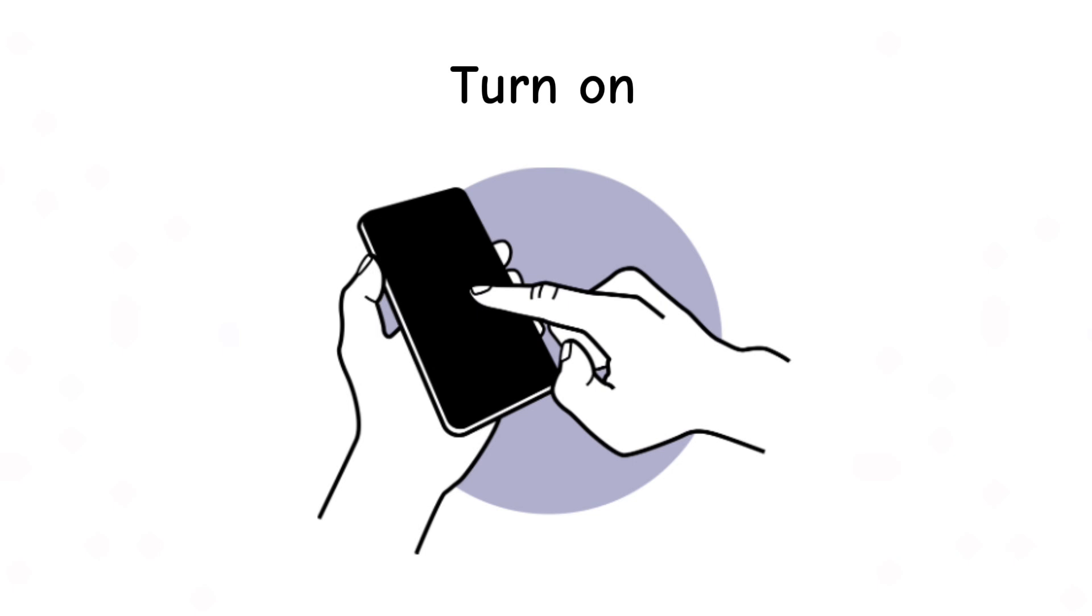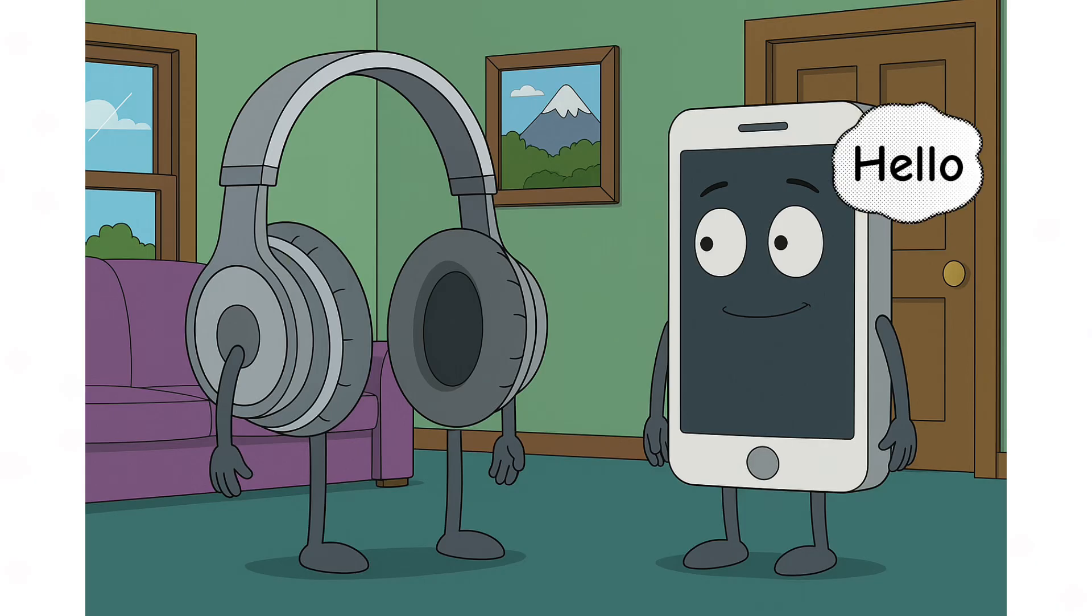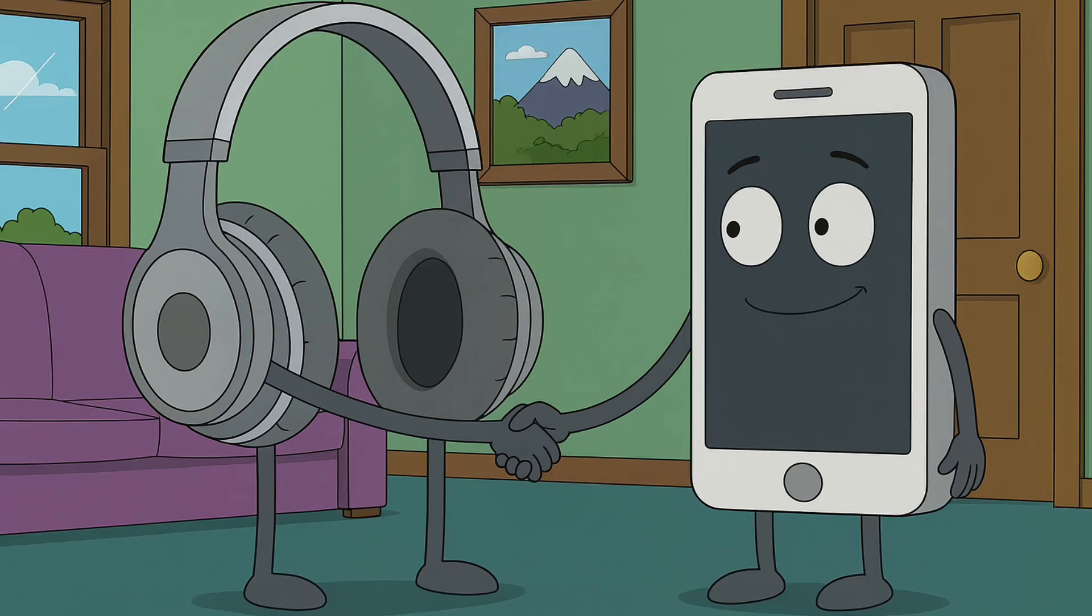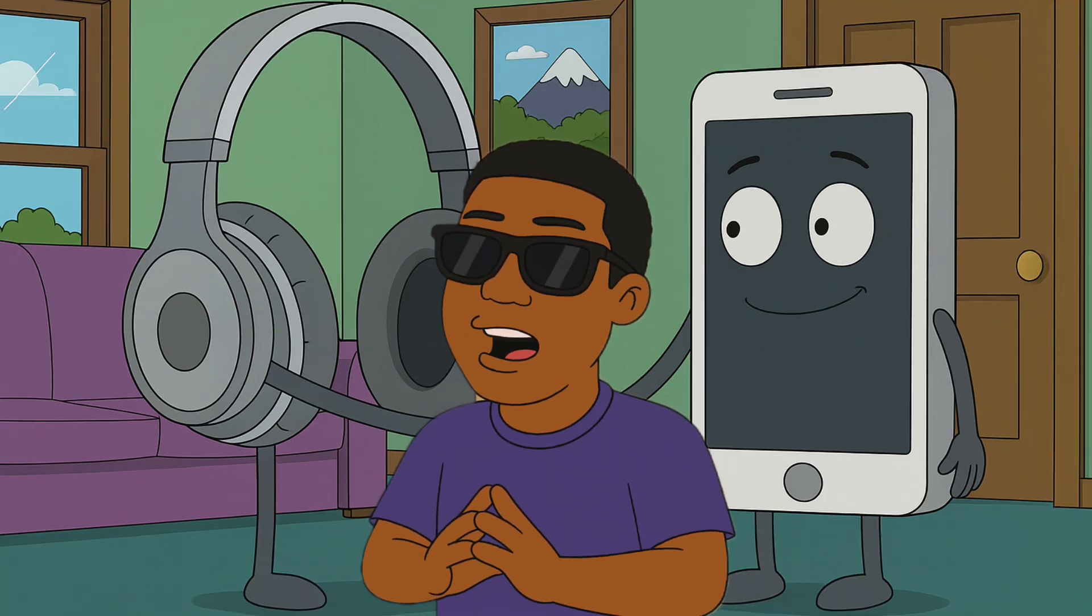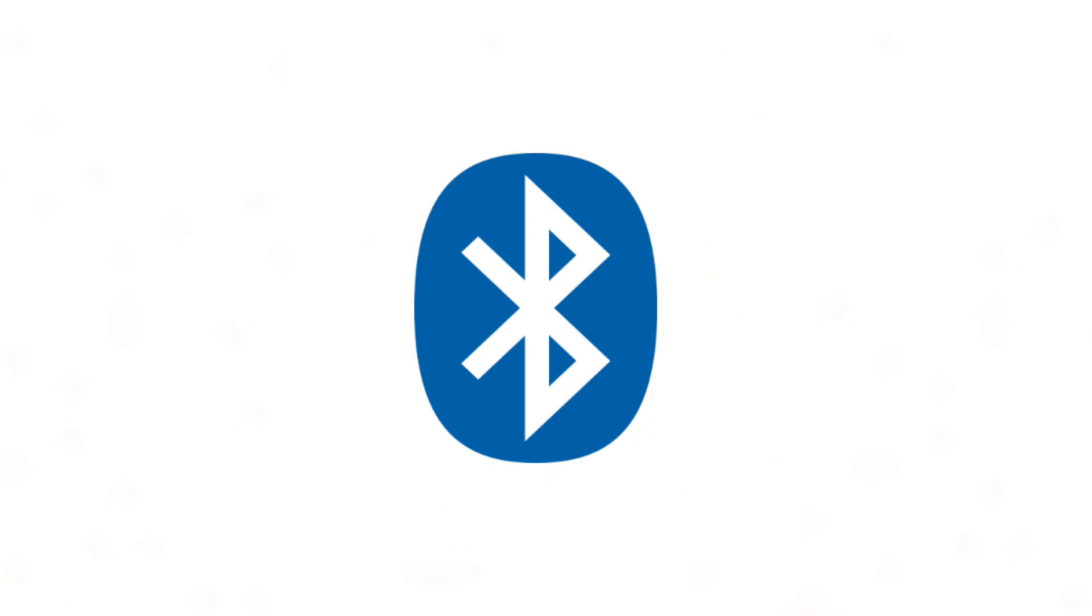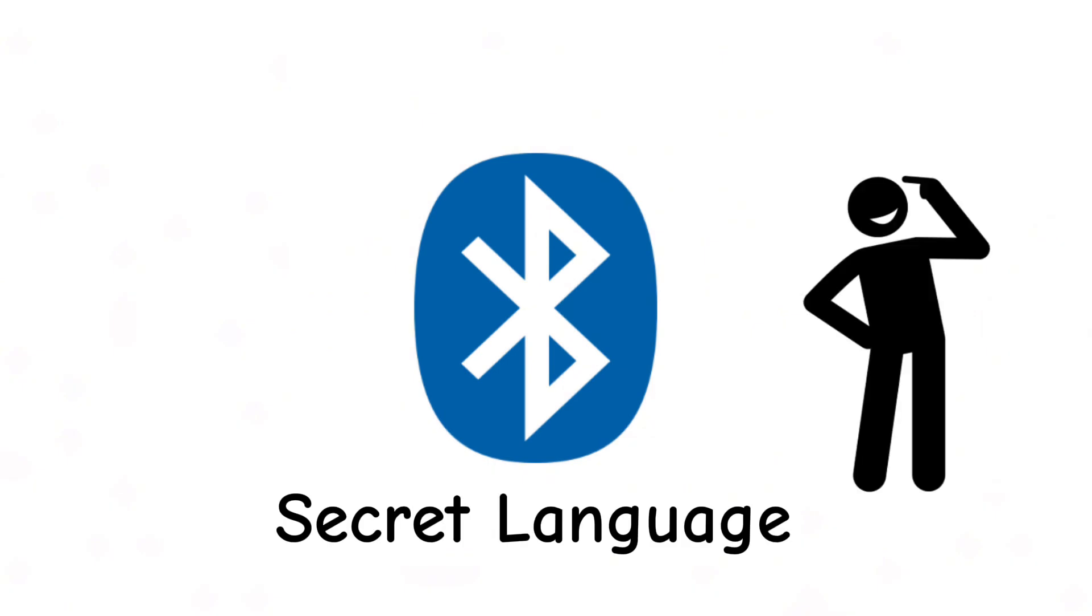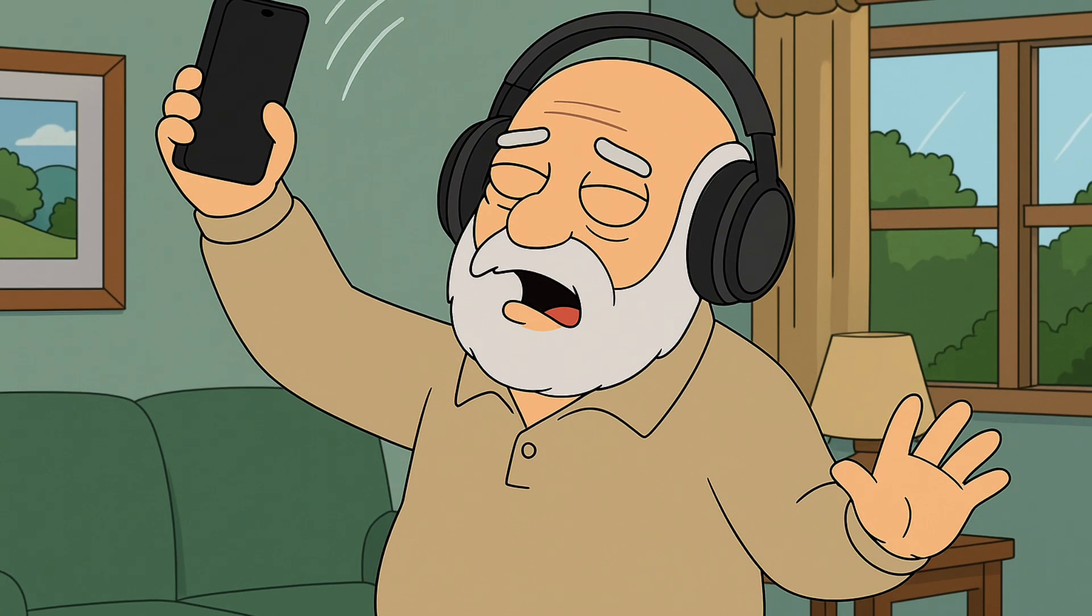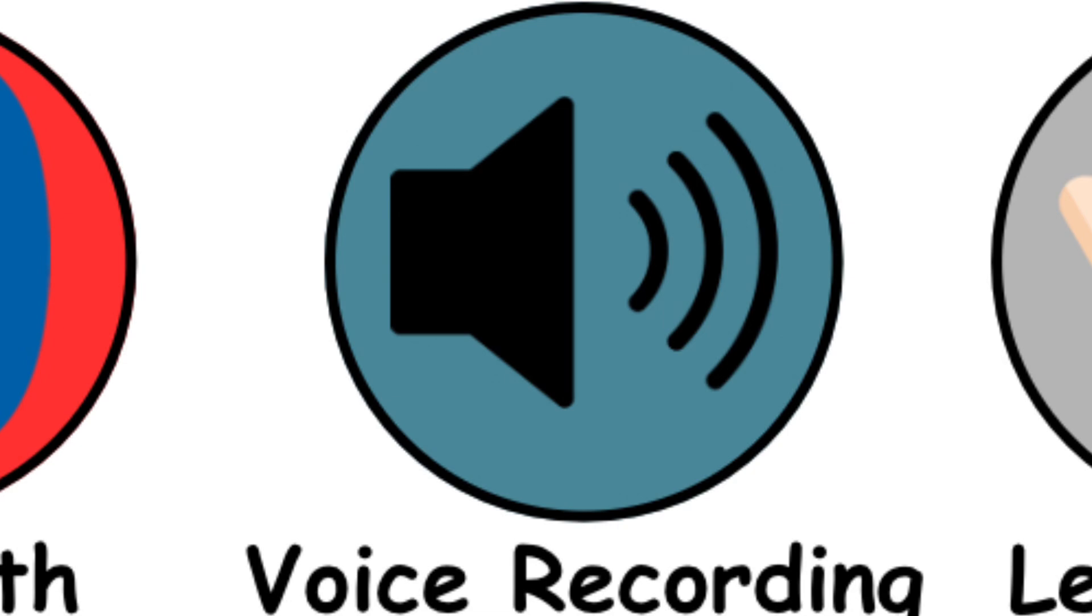When you turn it on, your device starts broadcasting a little hello, I exist signal. Another device hears it, they shake hands digitally, and that's called pairing. Once they remember each other, reconnecting is easy, kind of like two friends who don't need to reintroduce themselves every time they meet. So in short, Bluetooth is your device's secret language. It's clever, efficient, and almost invisible, until it randomly refuses to connect, and you're left waving your phone around like an idiot, hoping the headphones pick up the signal.